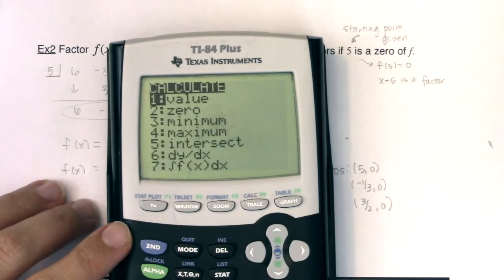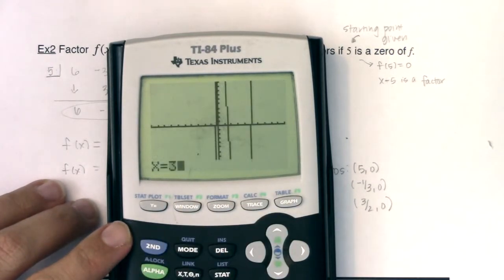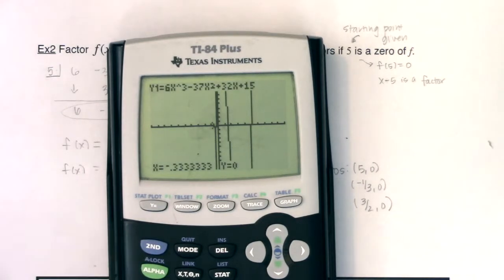And you could check it. If I plug in 5, I do get 0 back out. If I plug in 3/2, I do get 0 back out. And then if I plug in, finally, negative 1/3, I do get 0 back out. So I did find my other zeros.